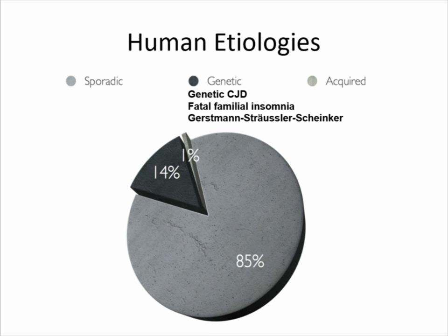By far the least common cause of prion disease are the acquired forms — well under 1%. That includes things like Kuru, iatrogenic CJD, and variant CJD, which we'll talk about in detail later.